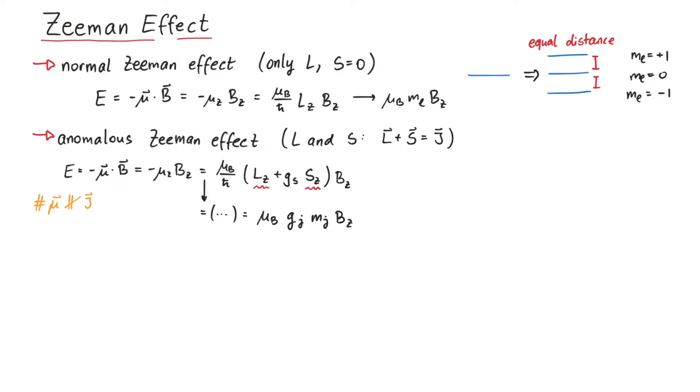where this gj is a special case of a g-factor, called the Landé g-factor. This is not a constant, rather it depends on l, s and j.